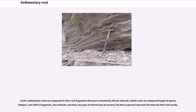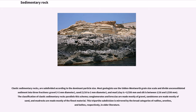Clastic sedimentary rocks are composed of other rock fragments that were cemented by silicate minerals. Clastic rocks are composed largely of quartz, feldspar, rock fragments, clay minerals, and mica. Any type of mineral may be present, but they in general represent the minerals that exist locally. Clastic sedimentary rocks are subdivided according to the dominant particle size.